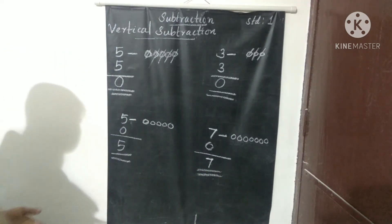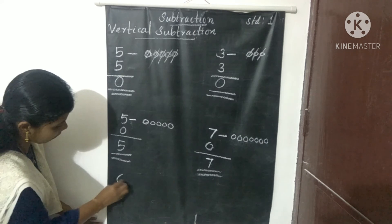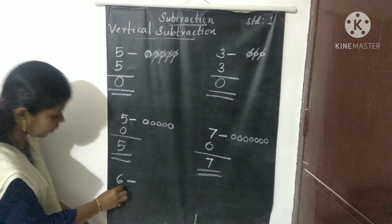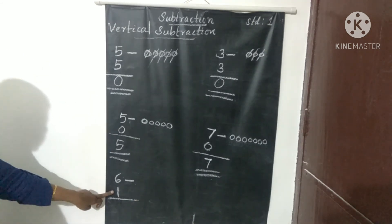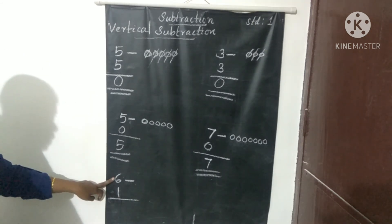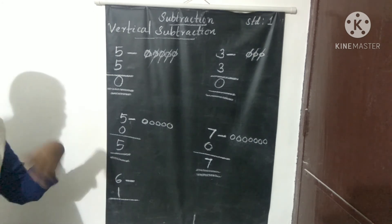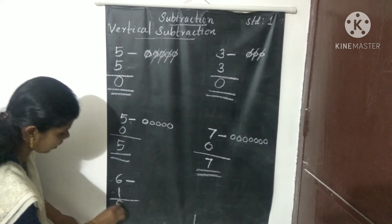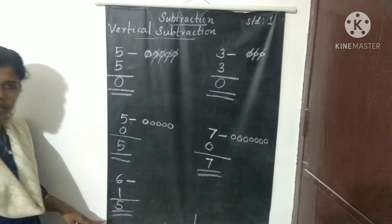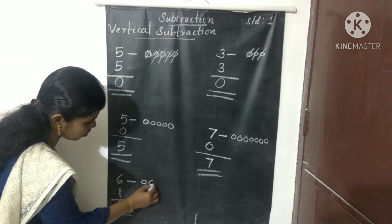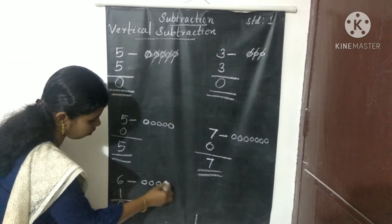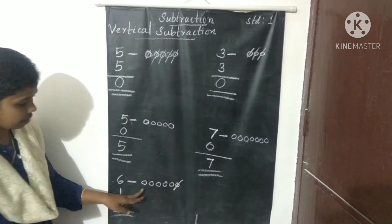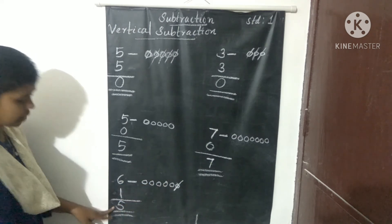Next type: one subtracted from any number. For example, 1 subtracted from 6 — the answer is just the number before 6. What is the number before 6? It is 5. Using beads: draw 6 beads — 1, 2, 3, 4, 5, 6. Cross out 1. The balance is 1, 2, 3, 4, 5. The answer is 5.